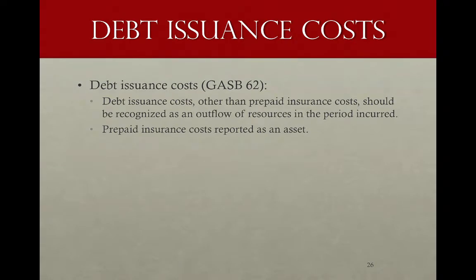Here's an example of an item reported traditionally in the statement of financial position that was not an asset, liability, or even a deferral. Debt issuance costs have been recognized as an asset and amortized over the maturity of the related debt. But those costs are related to the period in which the debt is issued — they're the cost of issuing the debt. With the possible exception of prepaid bond insurance costs, which would be reported as an asset recognized over the life of the insurance agreement, debt issuance costs should be recognized as an outflow of resources — an expense or expenditure — in the period in which they are incurred.